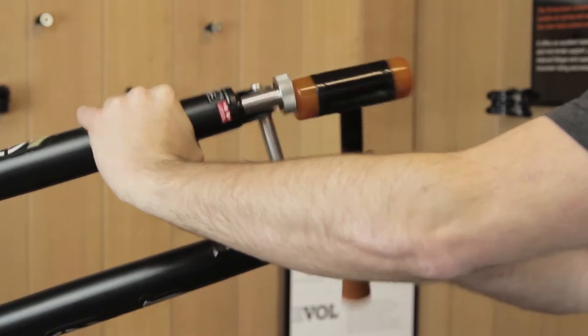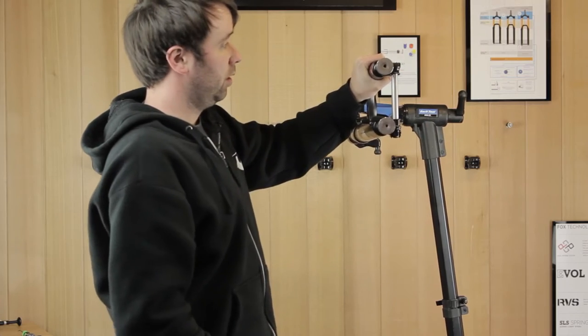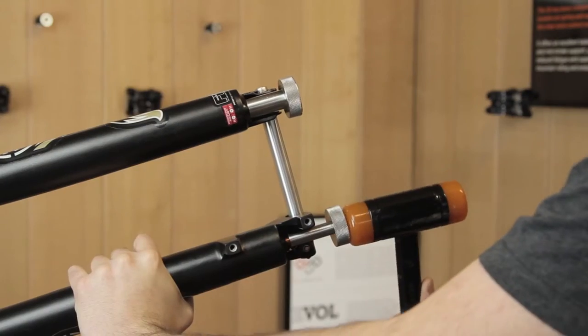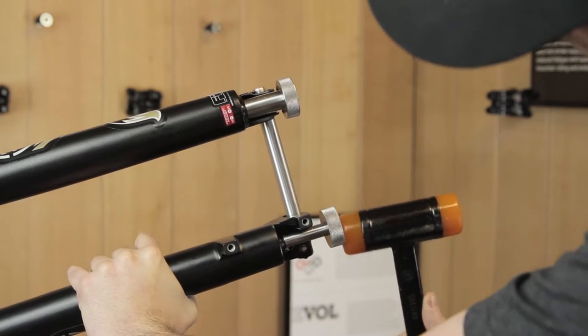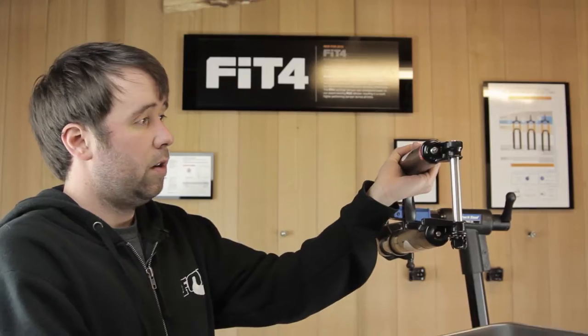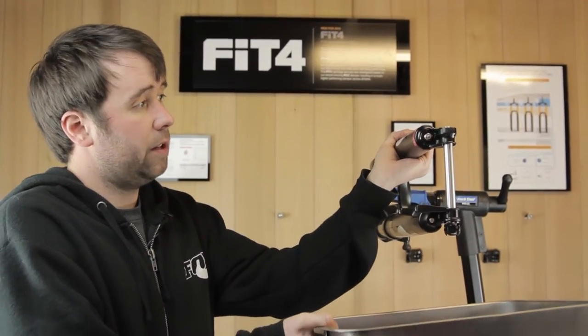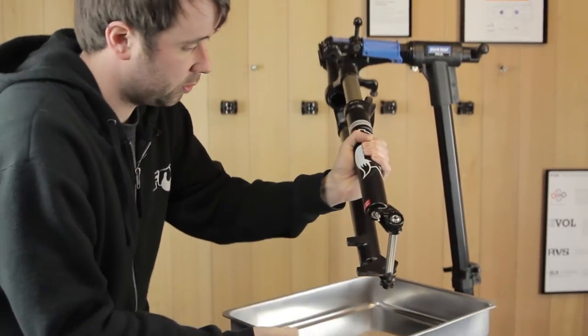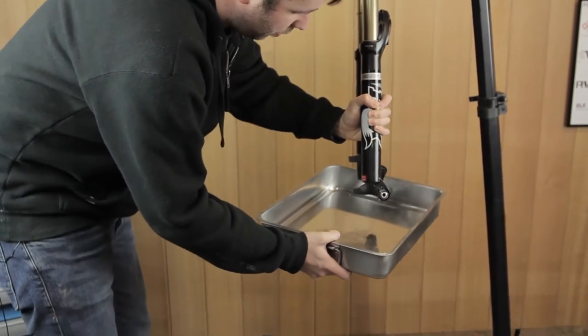Once they've been knocked into place, get ready to unwind them. A little tip is to have your oil tray ready, and as you lower the forks, you're going to slide your lowers off.